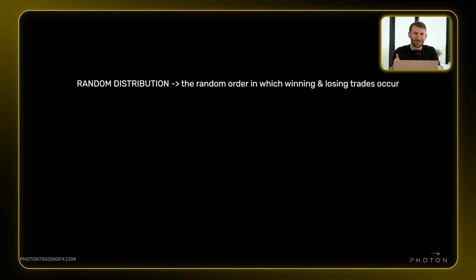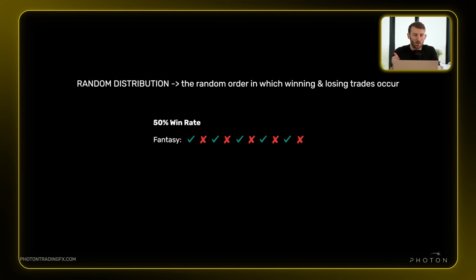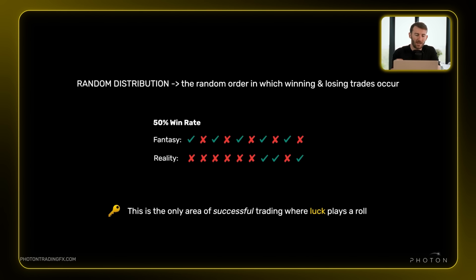Why can you lose eight times in a row with a 50% win rate? We can thank random distribution — the random order in which winning and losing trades occur. With a 50% win rate we subconsciously imagine every other trade will alternate between winner and loser, but in reality in the short term we can have long consecutive losing streaks. In the short term your results can look nothing like your actual true edge, but over a large number of trades your real numbers will start to show up.